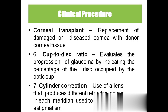Cup to disc ratio is used to evaluate the progression of glaucoma — checking whether the percentage of the disc occupied by the optic cup has increased. This is also a test for glaucoma. Cylindrical correction means putting on glasses, using lenses to produce different refractive power — plus 1, plus 2, plus 3, or minus 1, minus 2 — to correct nearsightedness, farsightedness, and astigmatism, which is blurred vision.